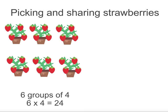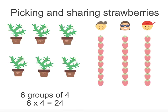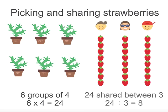Now for the second step. If I want to share the strawberries between three people, how many do they get each? This is sharing 24 equally between three, so we use division. 24 divided by three equals eight strawberries each.